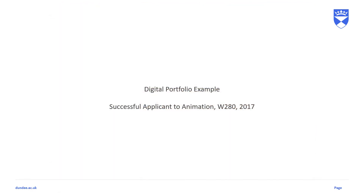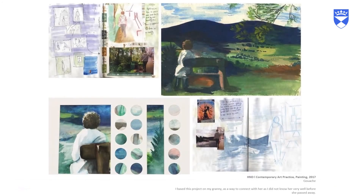The next portfolio is from a successful applicant to animation in 2017. Animation is all about communicating stories and messages visually — it can encompass so many different things from landscape design to character development. The most important thing is that you show you are creating your characters from scratch, demonstrating research and development. This applicant applied from college and had a lot of work. In order to show the full range of her work and skill she gives us snapshots of her projects on each slide, and the annotation gives us the detail we need to understand what we are looking at.